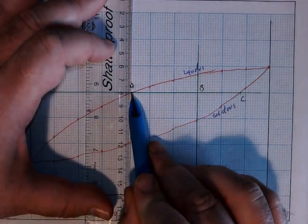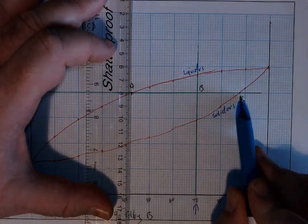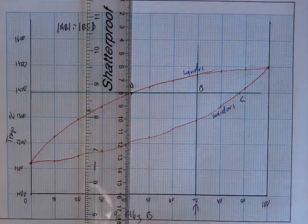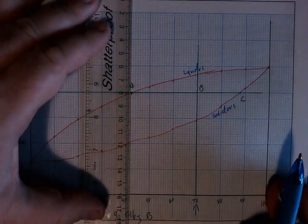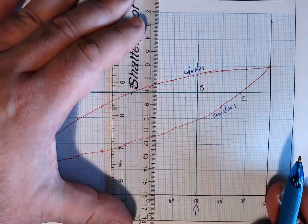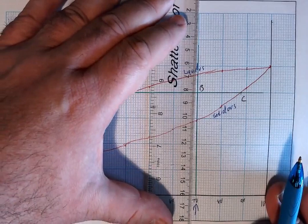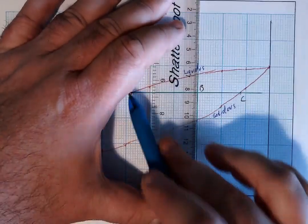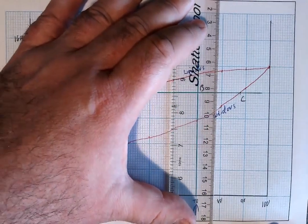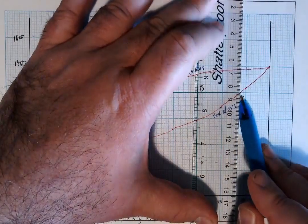Now if A is my liquidus line, that means at point A I have 100% liquid. If point C is my solidus line, then at point C I have 100% solid. As I move my ruler away from A, the proportion of liquid is decreasing, the proportion of solid is increasing, until I get to that point. So AB is measuring my solid. If I keep on moving, I keep on going until I get to that point where I have 100% solid.